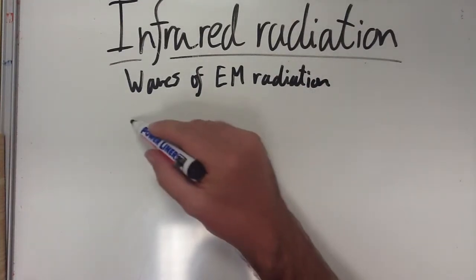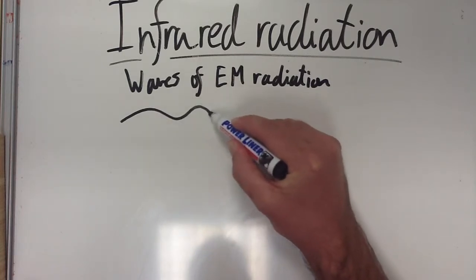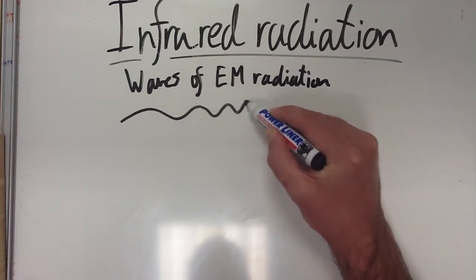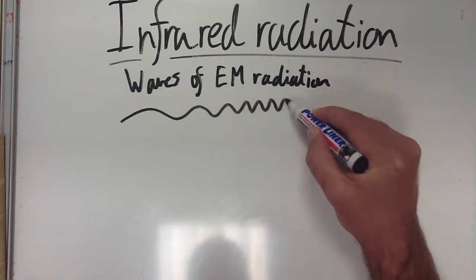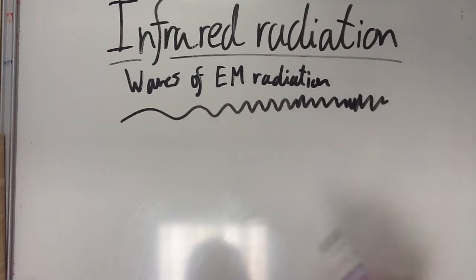So if we go look at all the different types of light, we start off with really long big radio waves, we get to microwaves, we quickly get to infrared, visible light, ultraviolet, X-ray, and then gamma.